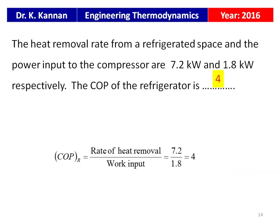Next question from the 2016 question paper: the heat removal rate from a refrigerator space is 7.2 kilowatts and the power input to the compressor is 1.8 kilowatts. COP of the refrigerator = rate of heat removal / work input = 7.2 / 1.8 = 4. The answer is 4.